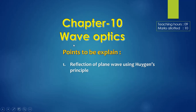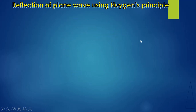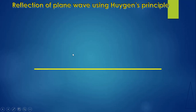In today's session I am explaining the reflection of plane wave using Huygens' principle. I am explaining reflection of plane wave, not refraction. Because of this reason, I am taking an XY reflecting surface, not a refracting surface. XY is not an interface or boundary — XY is a reflecting surface.